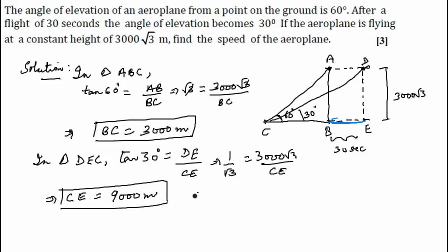We have CE and BC, and we need to find BE. Therefore, BE equals CE minus BC, which is 9000 minus 3000, that is 6000 meters. Now we have the distance BE and the time taken traveling from B to E. Therefore, speed equals distance upon time, so that is BE upon 30 seconds.